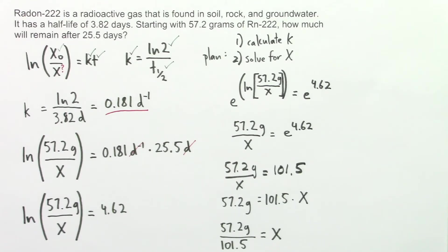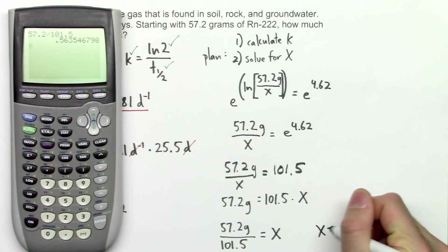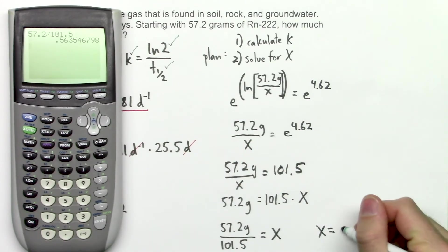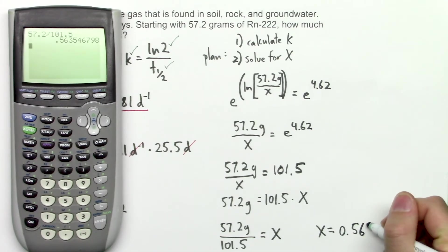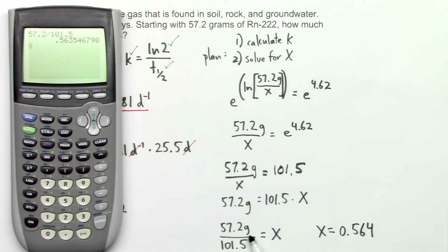To solve for x, I just have to do this division. And we get x equals 0.564, rounded to three significant figures. What are the units here? Well, we have grams in the numerator. We have nothing in the denominator. So that means that those grams don't get cancelled out. They carry through. And this is our final answer.